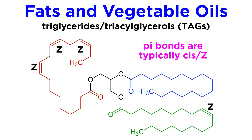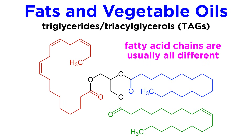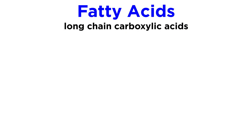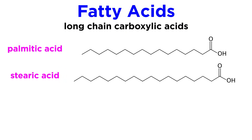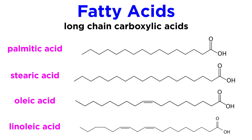For any double bonds present, they typically exhibit cis, or Z, geometry. And finally, the three fatty acid chains are typically different from one another. More than 100 fatty acids are known. Some common ones are palmitic acid and stearic acid, which are fully saturated, containing 16 and 18 carbons respectively. Some common unsaturated fatty acids are oleic acid and linoleic acid. The first is monounsaturated, with only one double bond, whereas linoleic is polyunsaturated, because it has two double bonds.